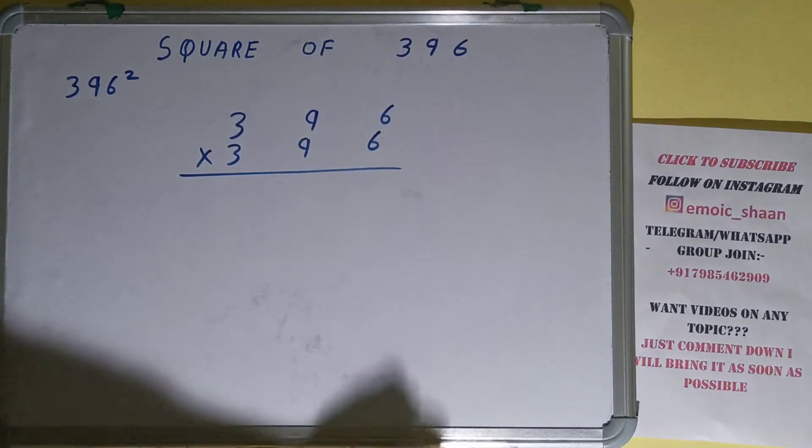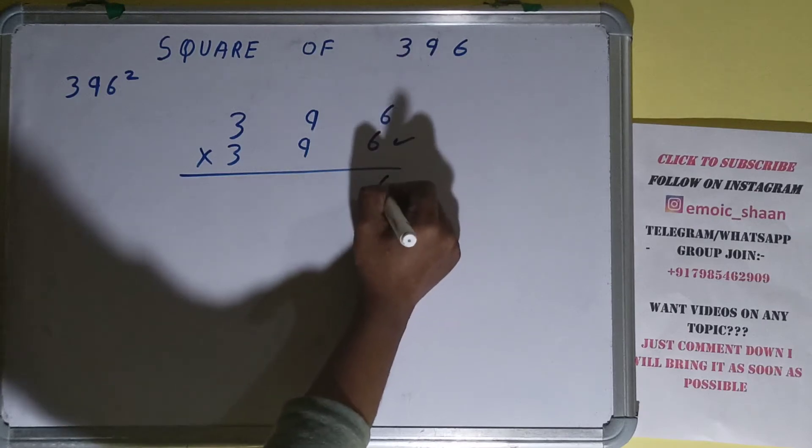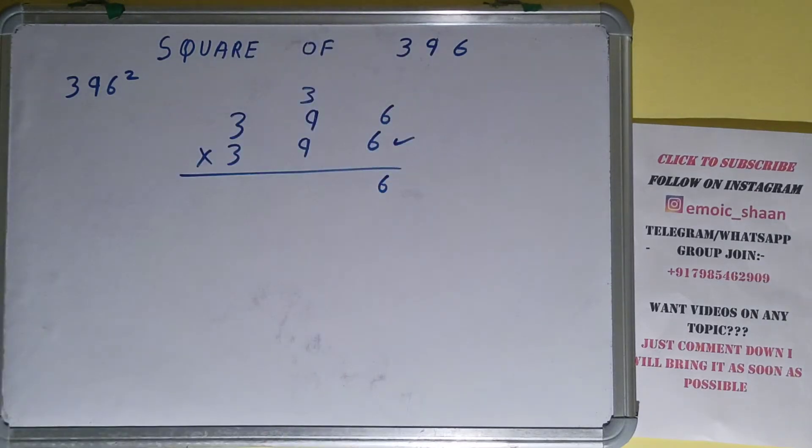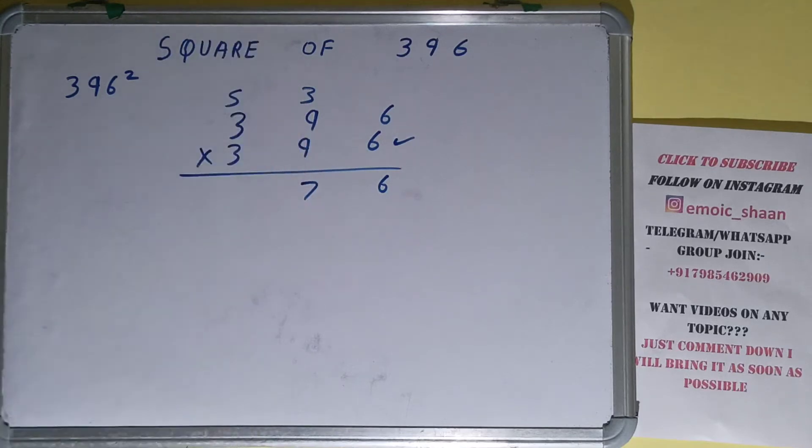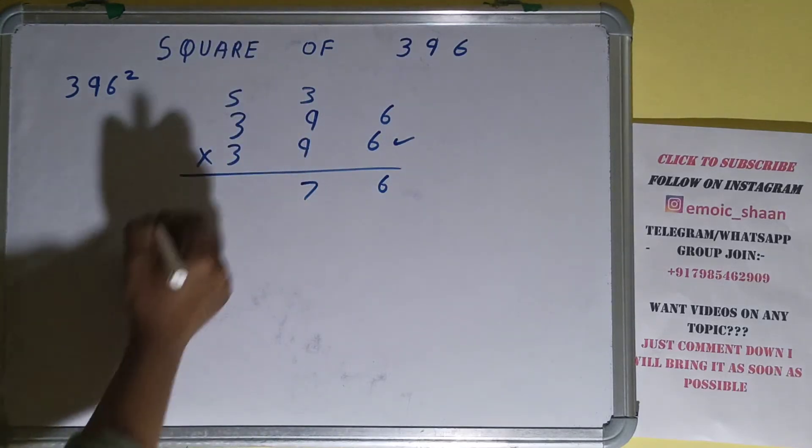normal multiplication. So let's start with this: 6 × 6 = 36, 3 carry. 6 × 9 = 54 plus 3 is 57, 5 carry. 6 × 3 = 18 plus 5 is 23.